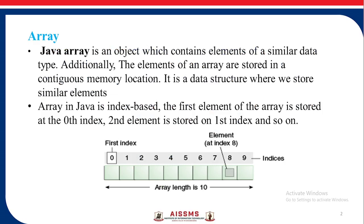What is array? The array in Java is an object which contains elements of similar data type. Additionally, the elements of an array are stored in contiguous memory location. It is a data structure where we store similar elements. Array in Java is index based, that is the first element of the array is stored at the zeroth index, the second element is stored on the first index and so on.